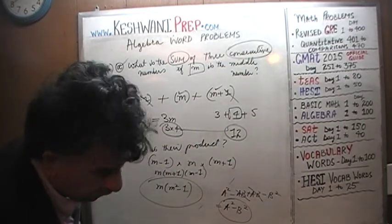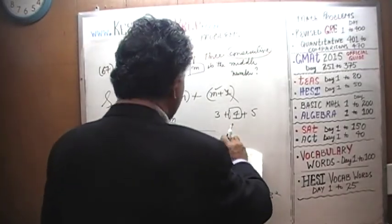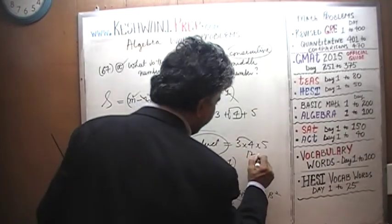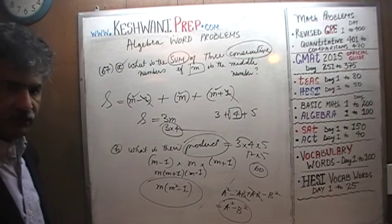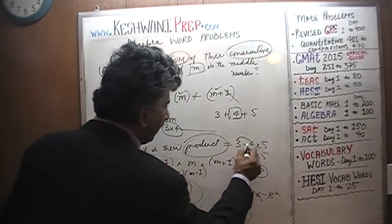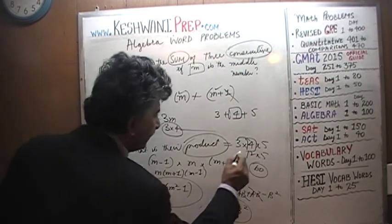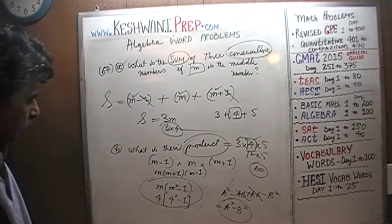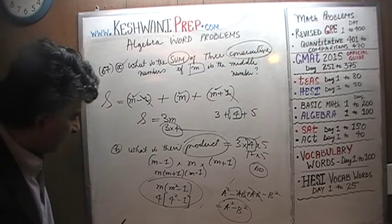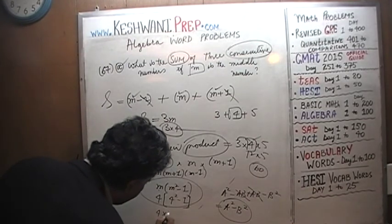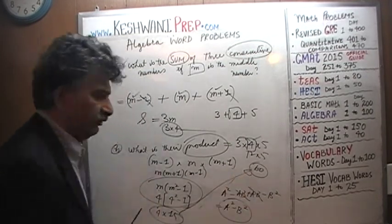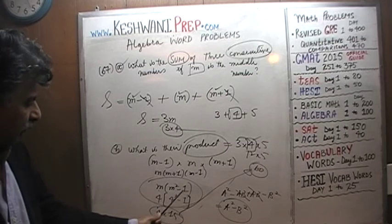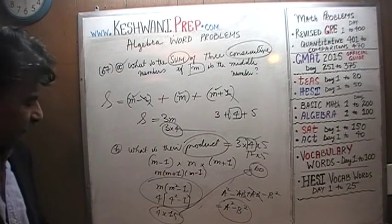We plugged in 3, 4, 5 before. Their product is 3 times 4 times 5: 3 times 4 is 12, and 12 times 5 is 60. Now check the expression with m equals 4: it's 4 times (4 squared minus 1). 4 squared is 16, 16 minus 1 is 15, and 4 times 15 is indeed 60. That confirms the answer is correct. The product of the three consecutive numbers is m times (m squared minus 1).